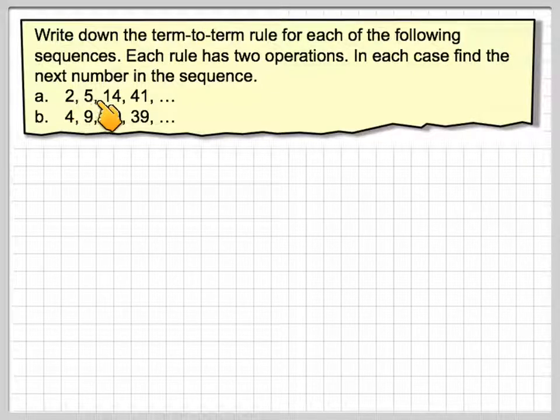So sequence A is 2, 5, 14, 41, and B is 4, 9, 19, and 39.